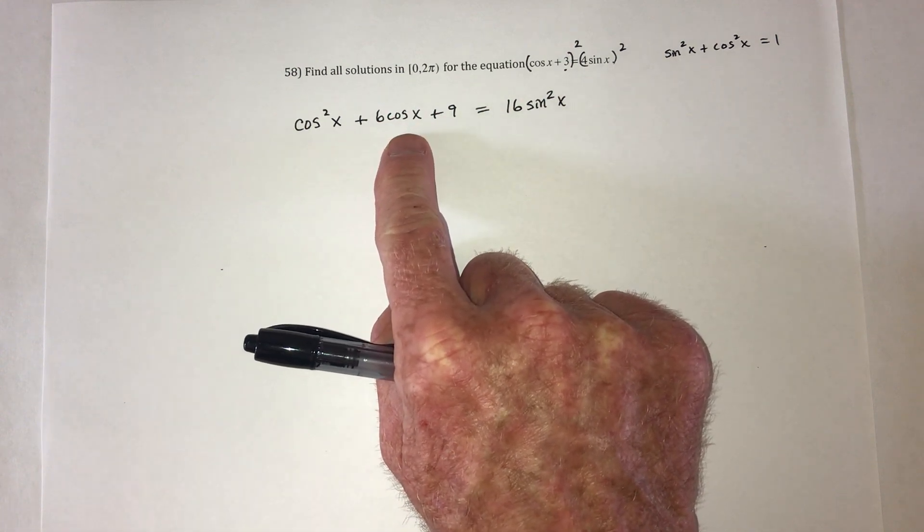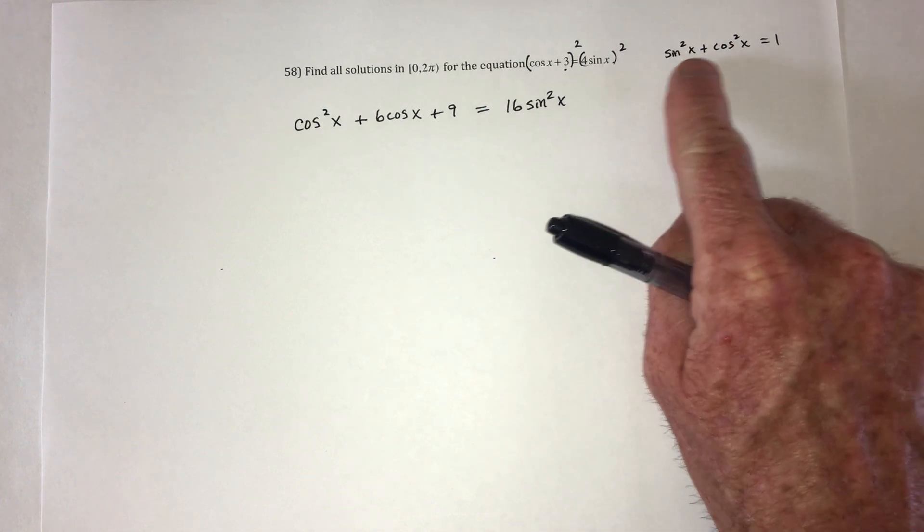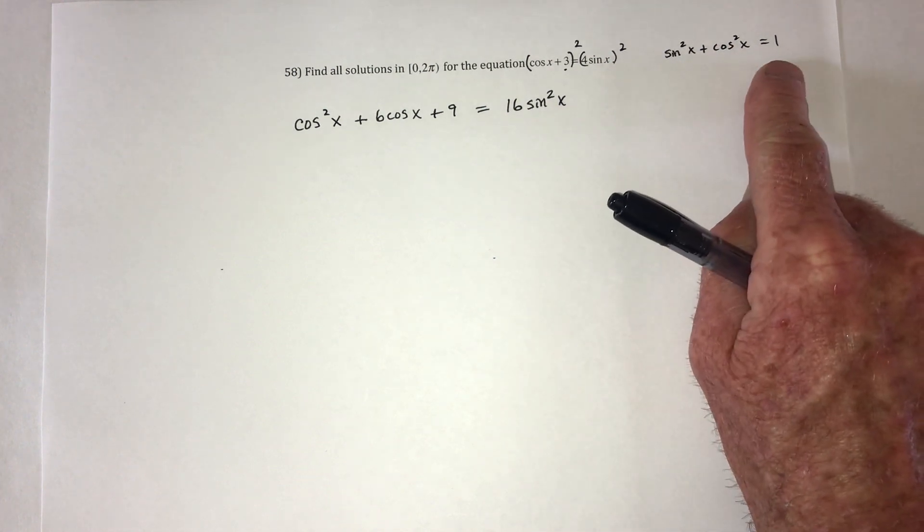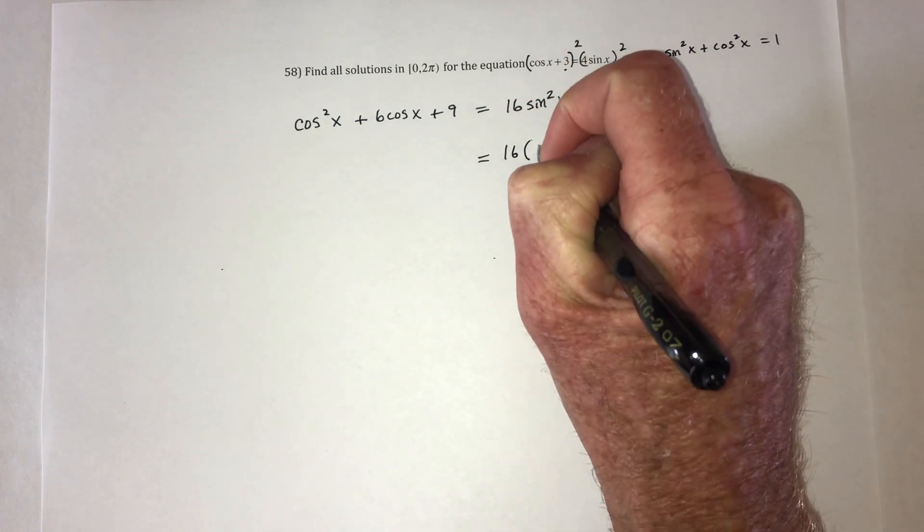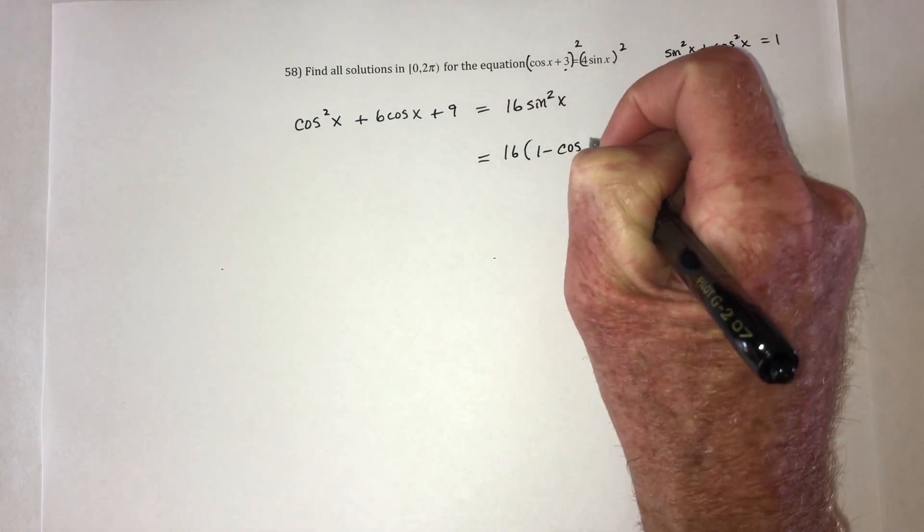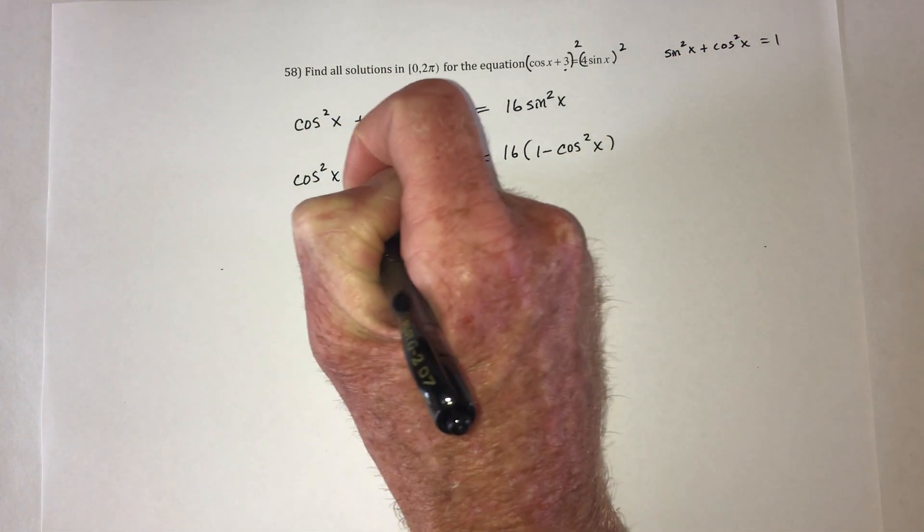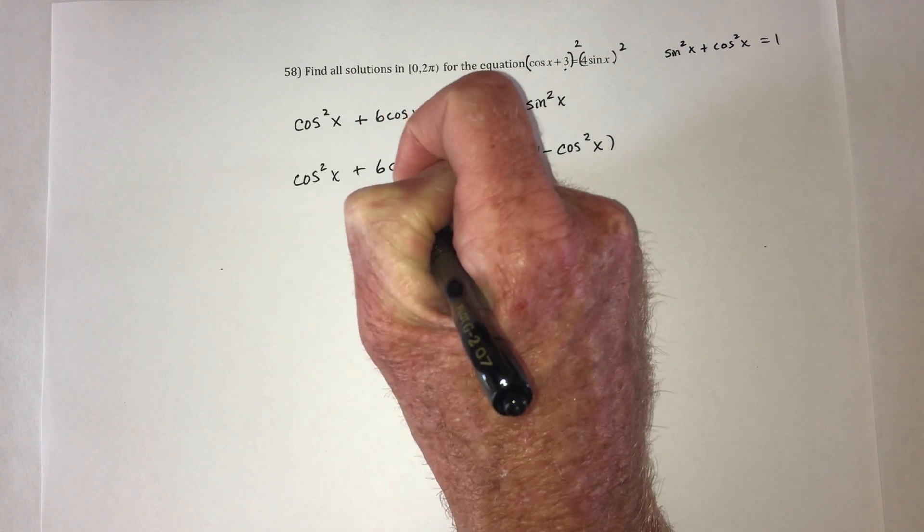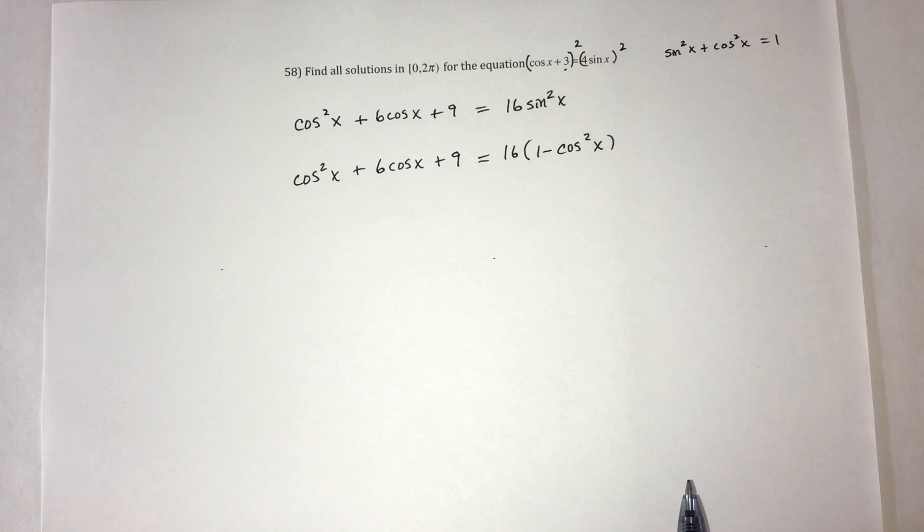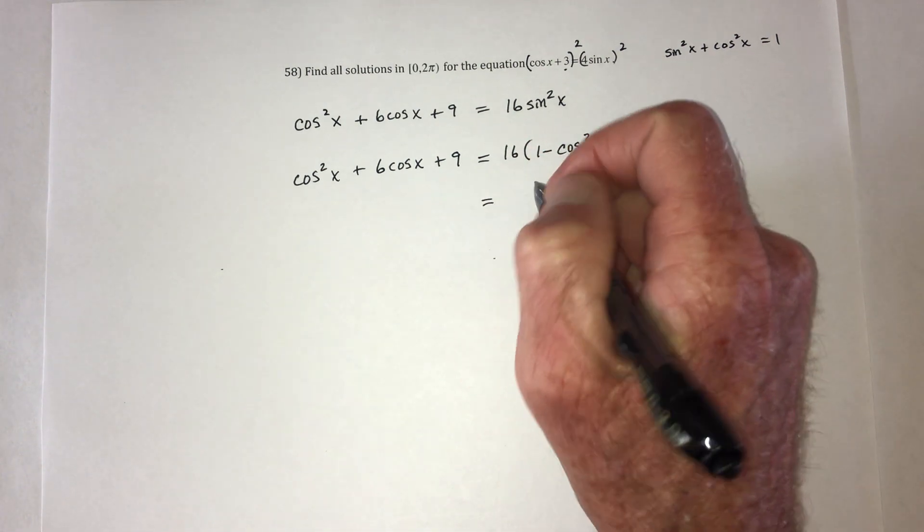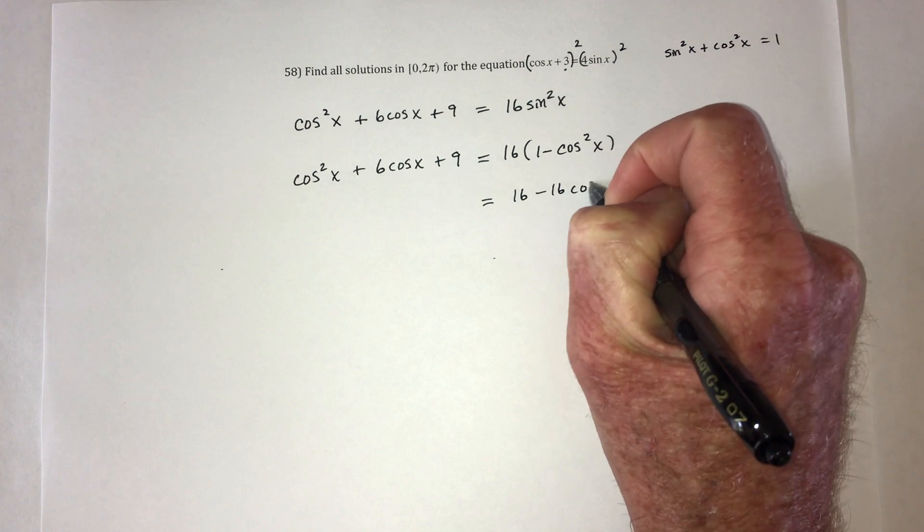So we should be working with cosines. So we'll need to eliminate this sine. That's where we're going to be using this. Sine squared equals 1 minus cosine squared. So replace the sine squared with 1 minus cosine squared. And for now, the left side stays the same. On the right side, multiply this out, so it's 16 minus 16 cosine squared.